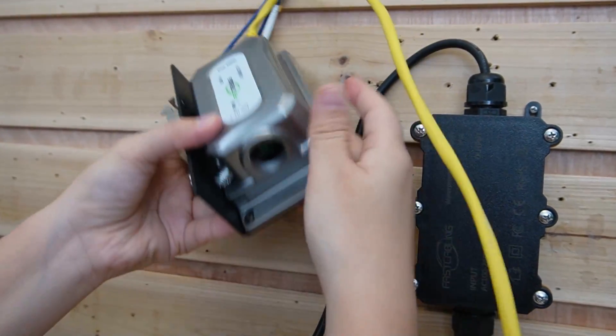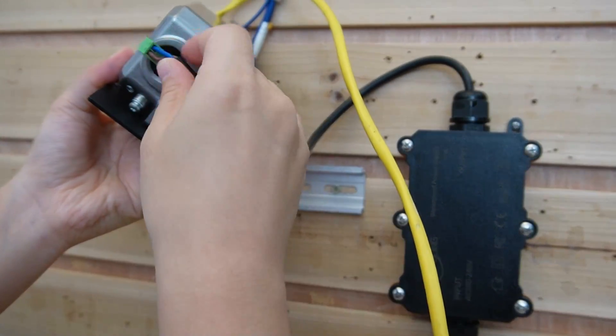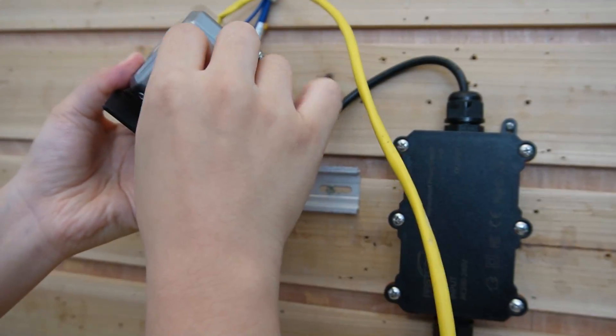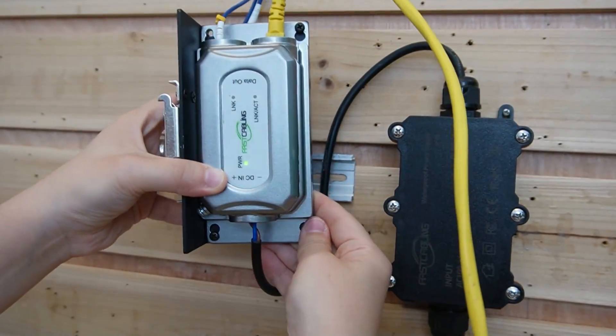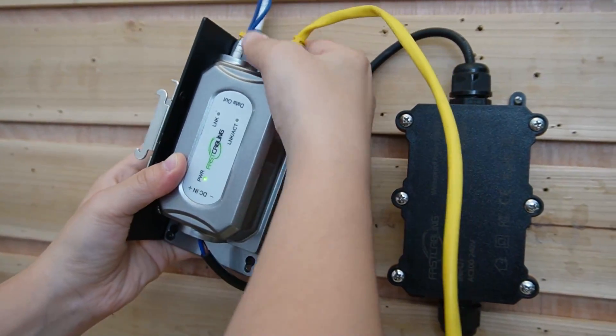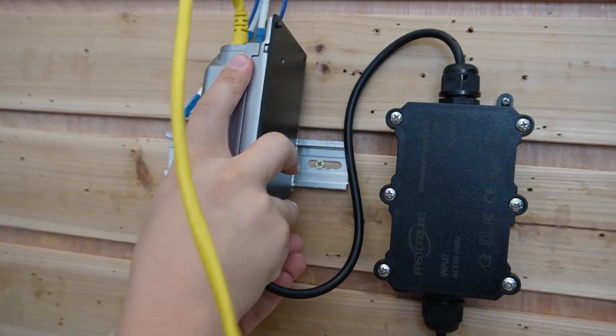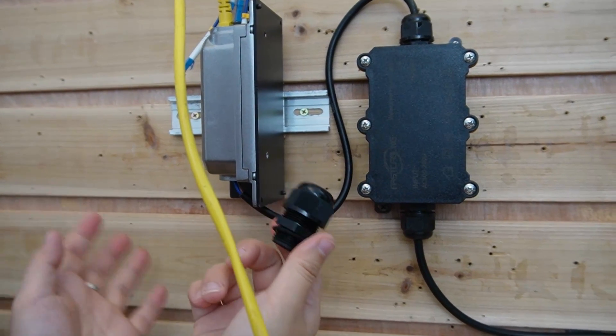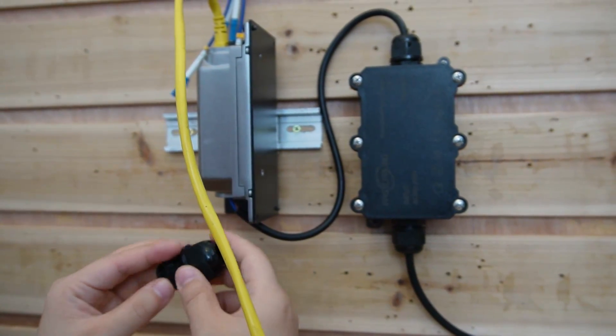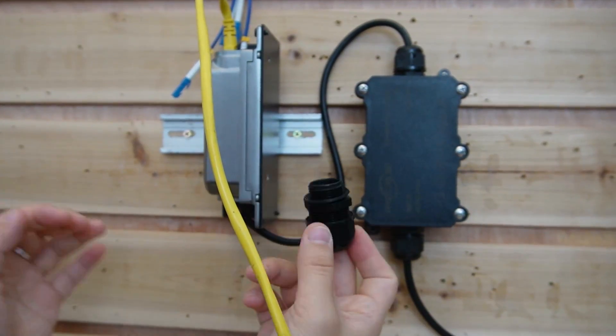Here we go. And then we are going to power it up. This is the power supply. Just like this. And the power indicator lights are on. I took out the nut and the gland for easy installation, but for outdoor applications, make sure you fasten the nut and the gland tightly.